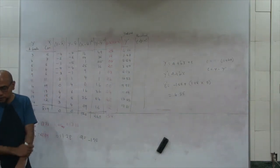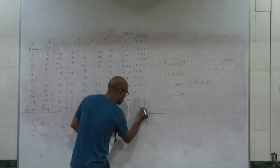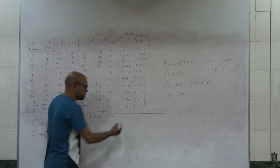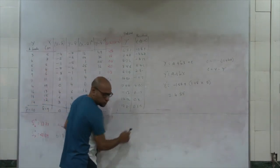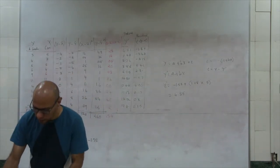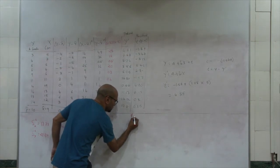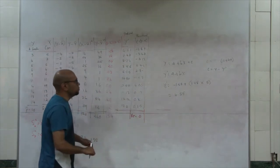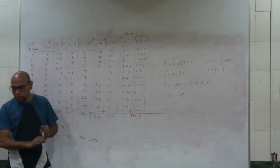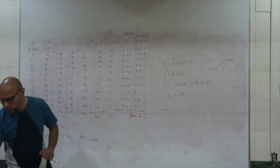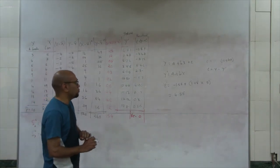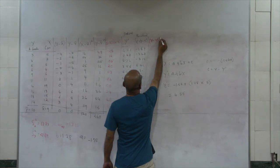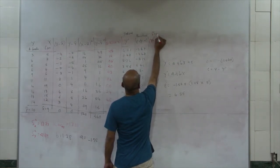Let's do the subtraction and find out the residual. If we sum the residuals, then sigma-e would be 0. The sum of the residuals would be 0. So generally we end up squaring the residuals — that is, (y minus y-prime) squared. This is called the sum of squares residual.